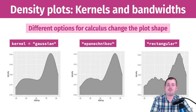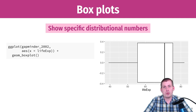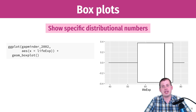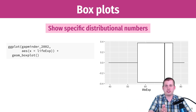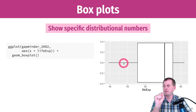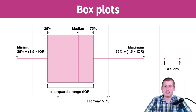Next we have box plots, which you've hopefully seen in a statistics class. They're useful because they're easy to draw by hand — invented hundreds of years ago. You can get specific numbers from a column of data and make a picture of it. In R you just use geom_boxplot with an x or y variable.